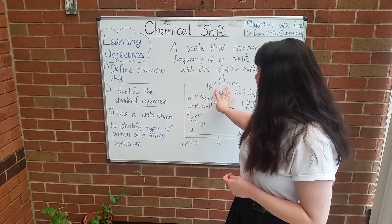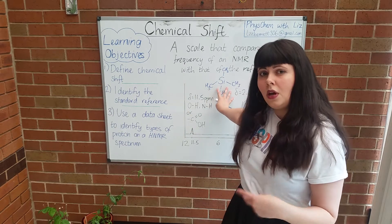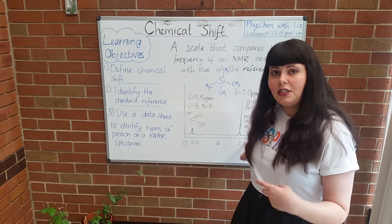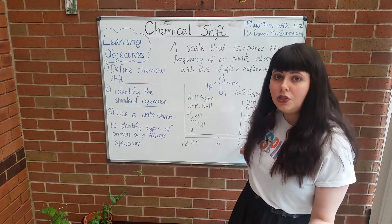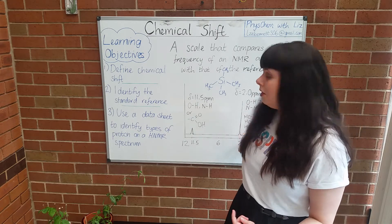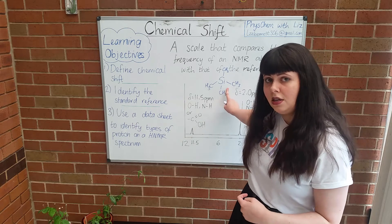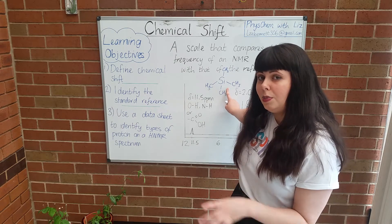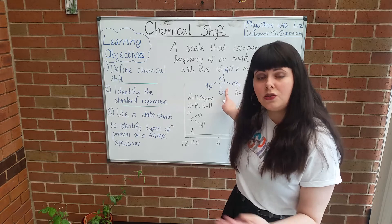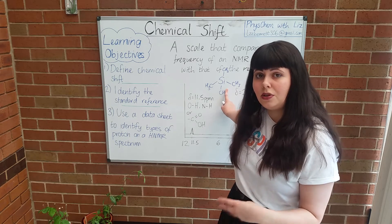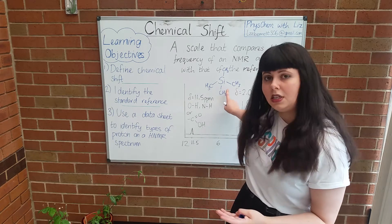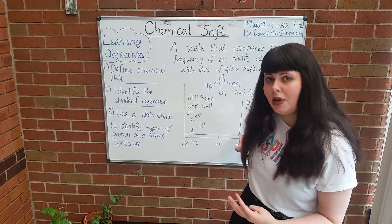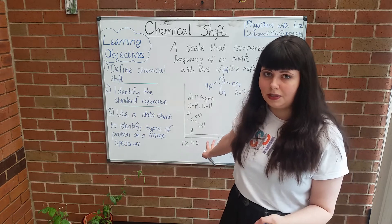TMS is set at zero. On some NMR spectra a peak will be present at zero and they'll ask you to label it in an exam — you just label it as TMS. But sometimes it's not present; the person running the spectrum just gets rid of it because anything at zero you know it's going to be this. So in the spectrum I'm going to talk about in a minute, I've not included it.